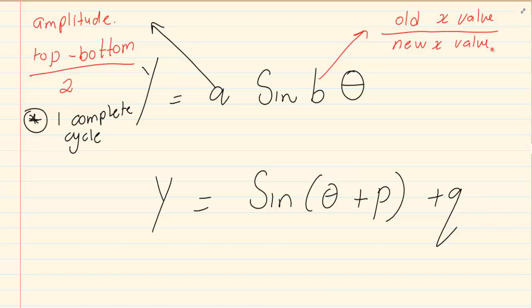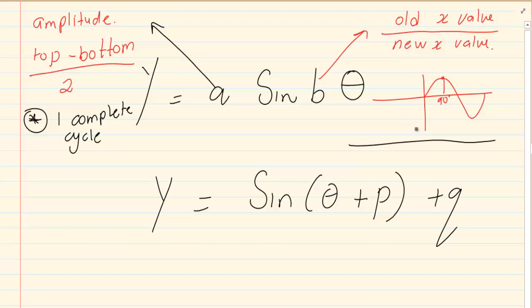If you look at your mother graph and you want a turning point, you know the sin turning point is at 90. So the old point is usually 90. But then you're given a diagram and now you've got that this is 180. So you'll take old divided by new: 90 divided by 180.